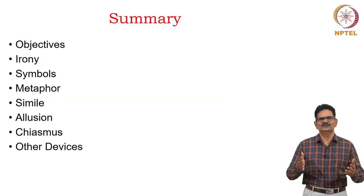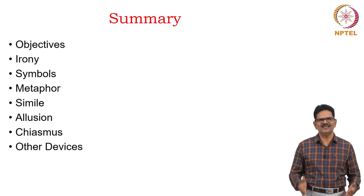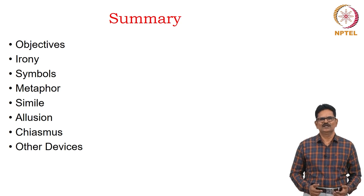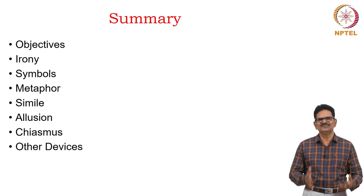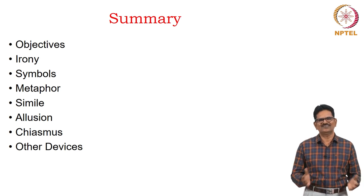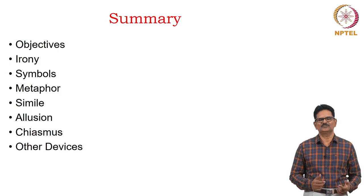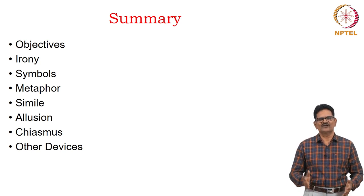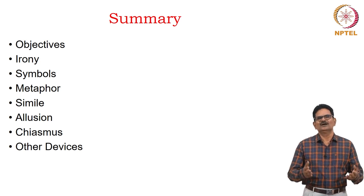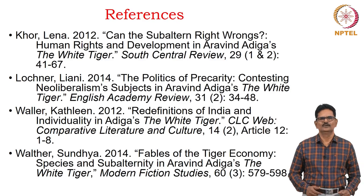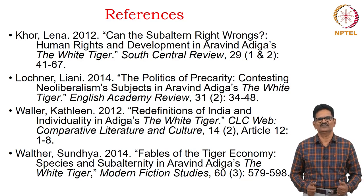To summarize our discussion on literary devices: first, we saw the objectives; next, we mentioned several cases of irony in the novel; then went on to discuss symbols in the novel; we focused on metaphors which contributed to the images in the novel; and we spent more time on similes which contributed to the realistic aspect of the novel. What we primarily noticed is the beast or animalistic aspect of both rich and poor people. We also have some allusions to Shakespeare, the chiasmus in the novel, and something like an aphorism. Here are some references for you to understand more about various kinds of literary devices in the novel. Thank you.